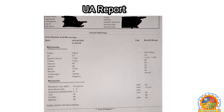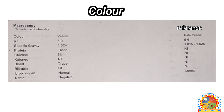This is the UA report. The details are hidden for confidential purposes. Now let's see the macroscopy analysis. The color of urine is pale yellow, which is normal. In some cases, the color of urine changes to red or green due to a medical condition or medications taken.